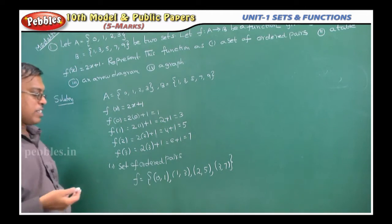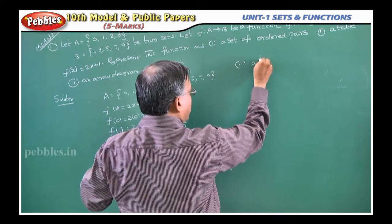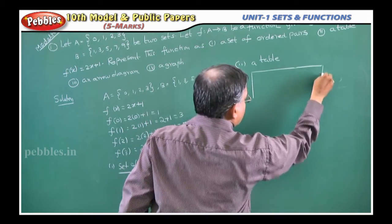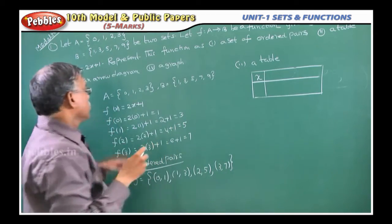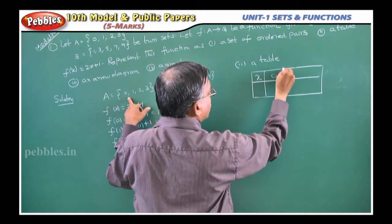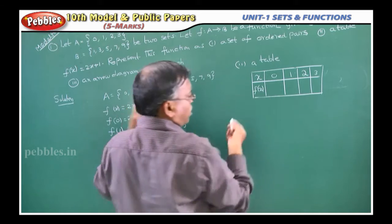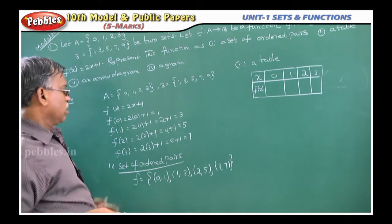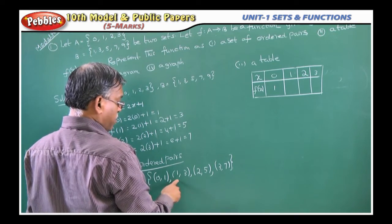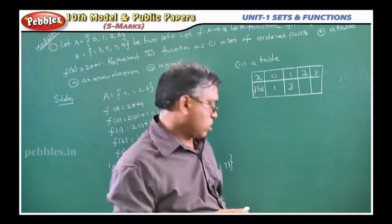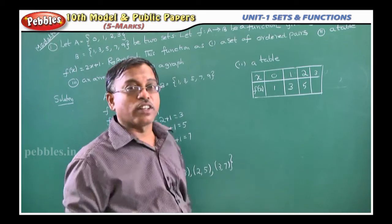This is a very simple way of representing a function. The second one is a table. In the table, simply write x value and f(x) value. What are the x values? 0, 1, 2, 3. What about f(x) values? f(0) = 1, the image of 1 is 3, so write 3 here. The image of 2 is 5, so write 5 here. The image of 3 is 7.